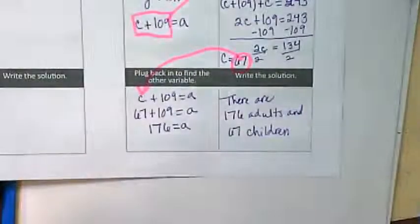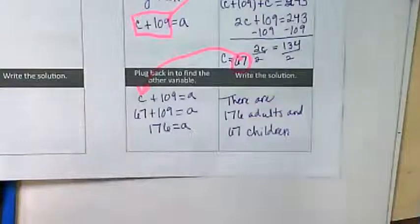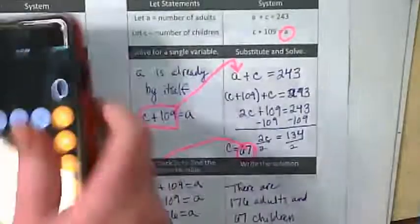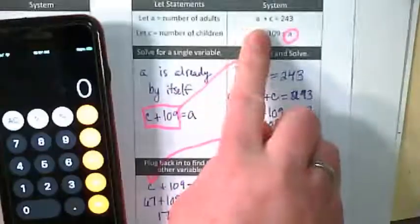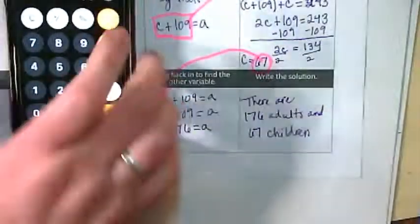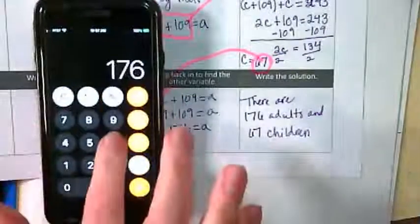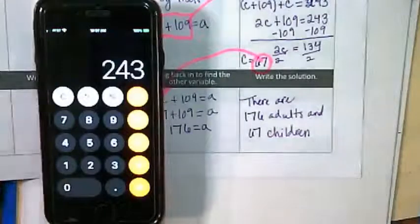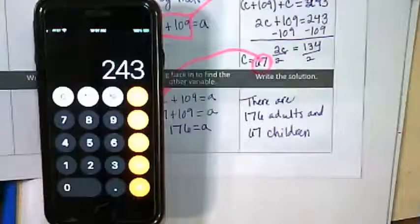We can also check that. Let's check that by going back to our original equation. It said A plus C is equal to 243. Well, let's add 176 plus 67. And we got 243. Just a quick way to check.